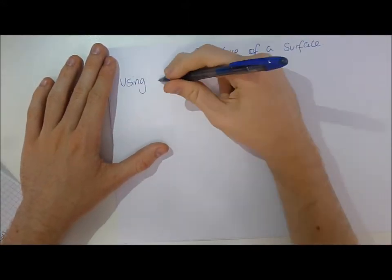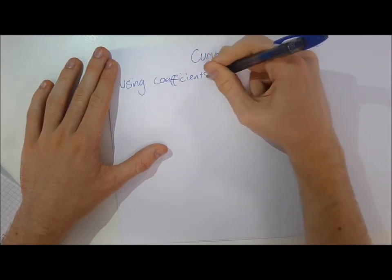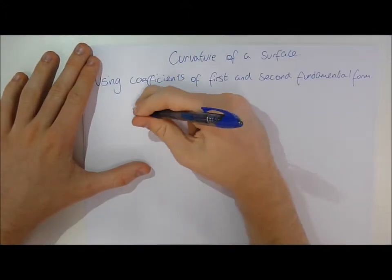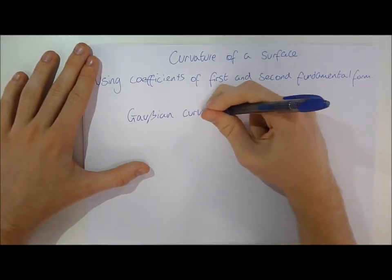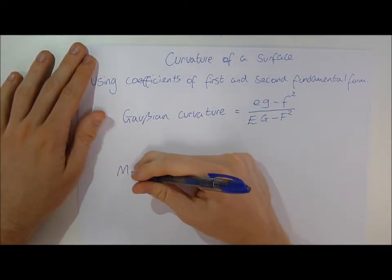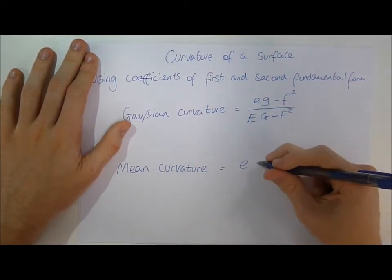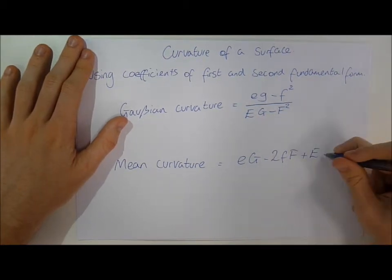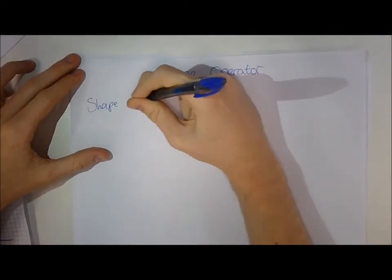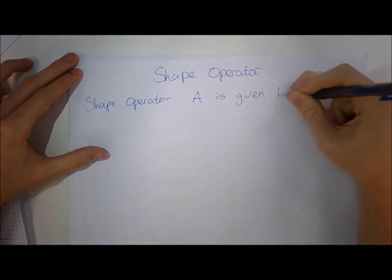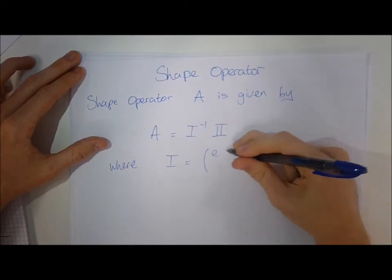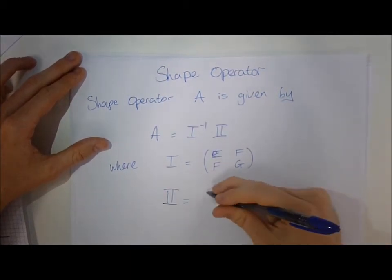There are many different curvatures that can be calculated for the surface. Using the coefficients of the first and second fundamental forms, the Gauss curvature is given by (eg - f^2) / (EG - F^2), and the mean curvature is given by (eG - 2fF + Eg) / (2(EG - F^2)). The shape operator A is given by A = I^(-1) · II, where I equals the matrix [E, F; F, G] and II equals the matrix [e, f; f, g].